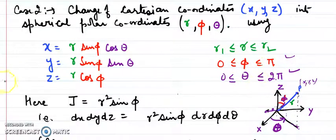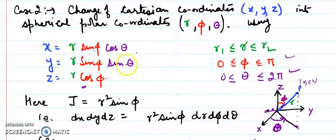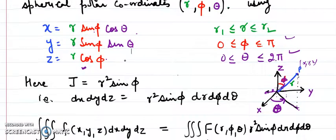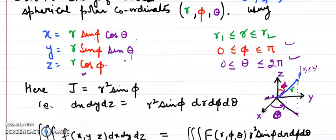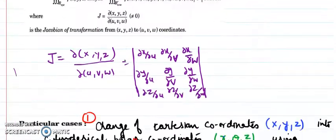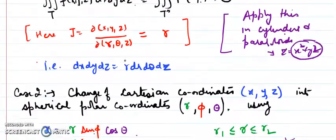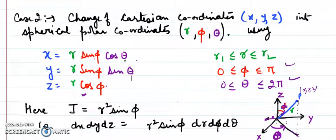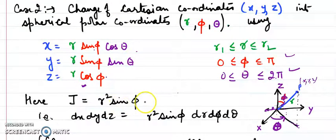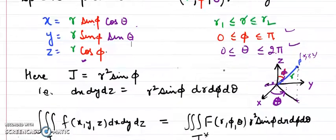To remember: z = r cosφ because φ is the angle with the z-axis (hence cosine), and x = r sinφ cosθ, y = r sinφ sinθ. When we compute the Jacobian determinant for spherical polar coordinates, it comes out to be r² sinφ. So the small volume element dx dy dz is converted into r² sinφ dr dθ dφ, and the integration proceeds in this form.